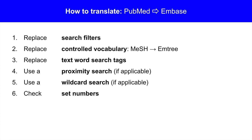To translate a strategy from PubMed to Embase, here are the procedures: replace search filters; replace controlled vocabulary, exchanging MeSH terms with EmTree terms; replace text word search tags; use a proximity search if applicable; use a wildcard search if applicable; and finally, check the set numbers.